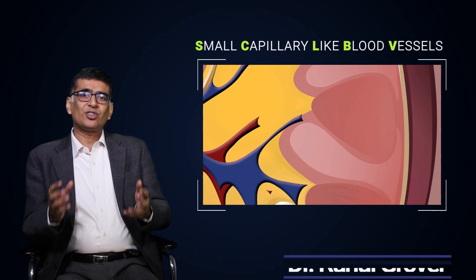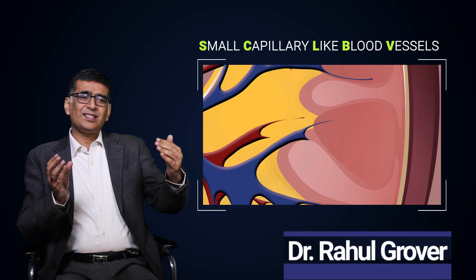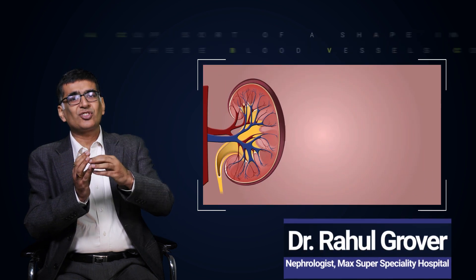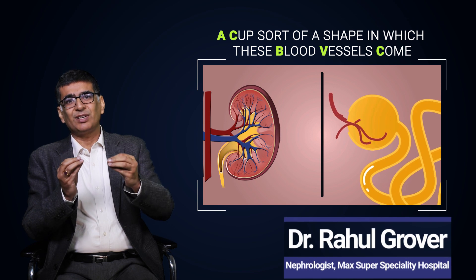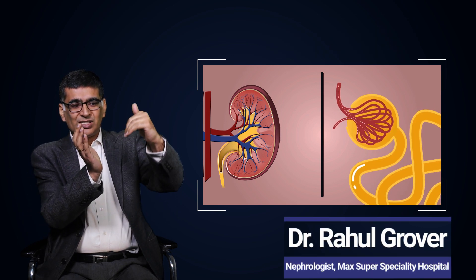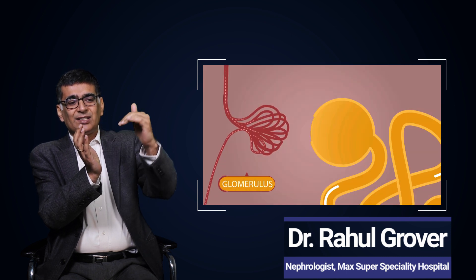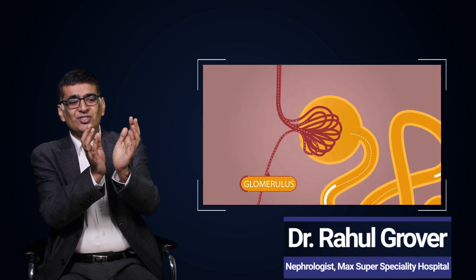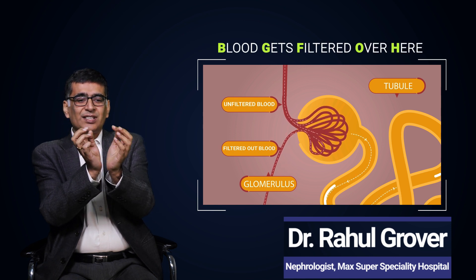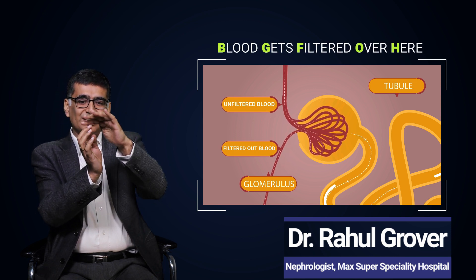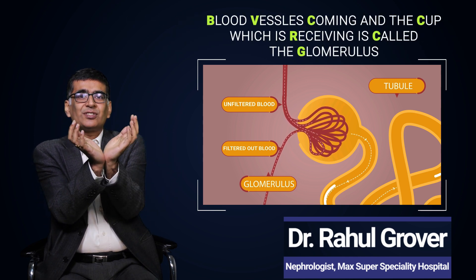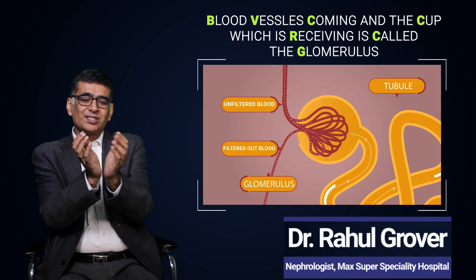When you look at the structure of the nephron, there are very small capillary-like blood vessels which come over there. They are very fine blood vessels, and there is a cup sort of a shape in which these blood vessels come. Because of their special nature, the blood gets filtered over here. This filtrate is called the glomerular filtrate, and this whole structure of the blood vessels coming into a cup which receives it is called the glomerulus.